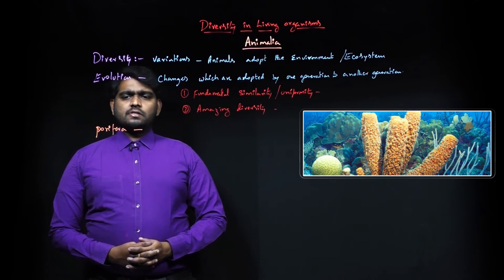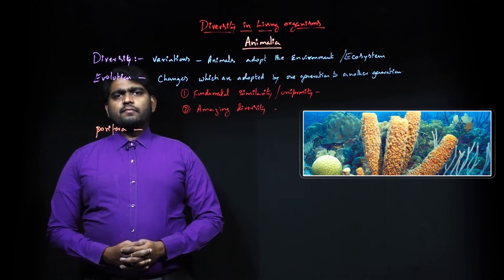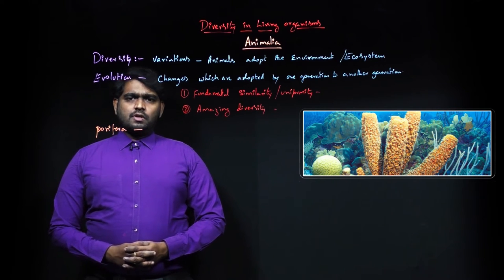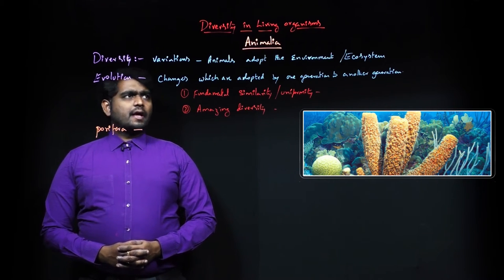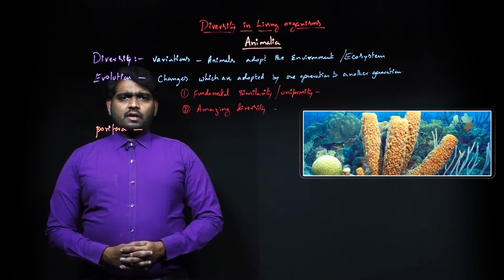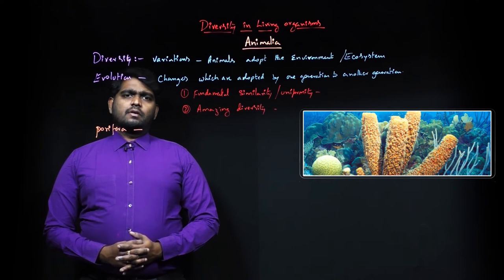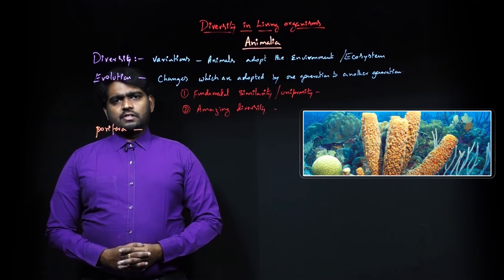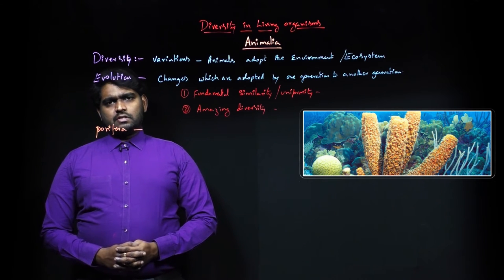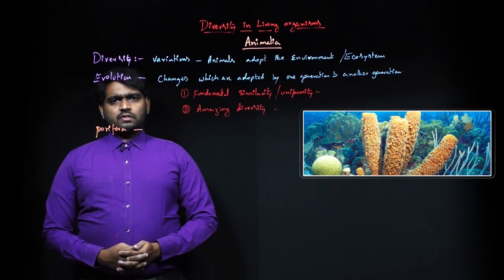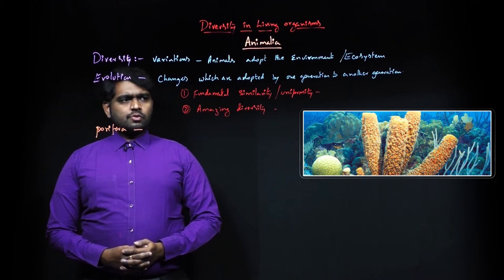...fundamental similarities, they are classified into kingdom, phyla, families, genus, and species - all the groups. In the Animalia, these are unicellular and multicellular. Unicellular animals are single cell, so that is Porifera, the first we start with. Based on that organization, unicellular cells develop into multicellular structures.